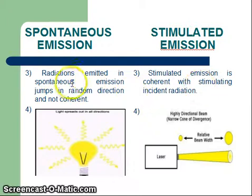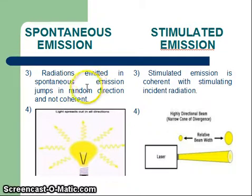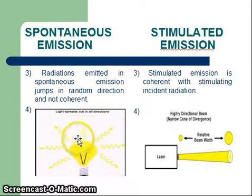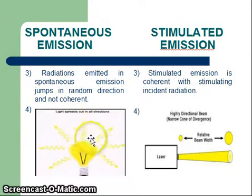Another difference is that in the case of spontaneous emission light is polychromatic, whereas in the case of stimulated emission light is monochromatic. An example of spontaneous emission is a bulb light.